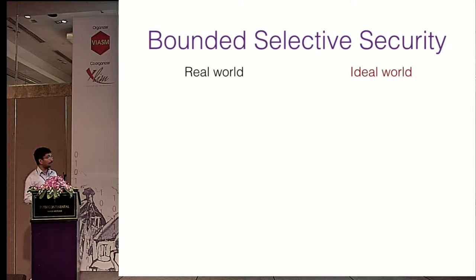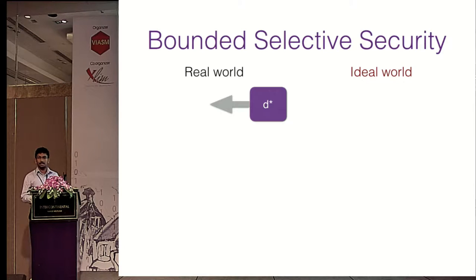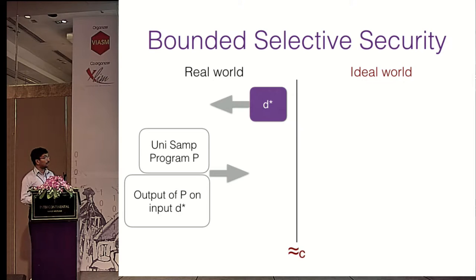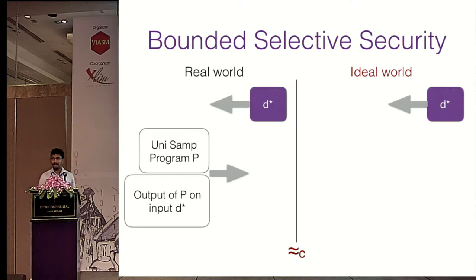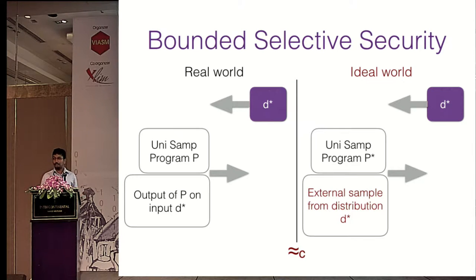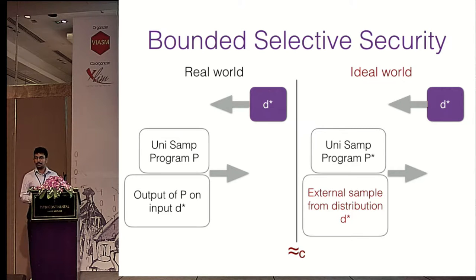What is bounded selective security? We work in the real-ideal paradigm. In the real world, the adversary gives the universal sampler generator the challenge distribution D* on which it will later require a sample. The challenger sends the universal sampler program P to the adversary along with the output of P on D*, where the randomness used is hidden. In the ideal world, the challenger responds with a program P* along with an external sample from D*, and these two worlds must be computationally indistinguishable.